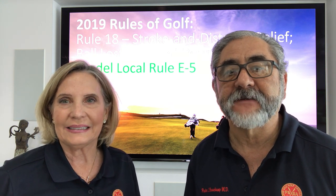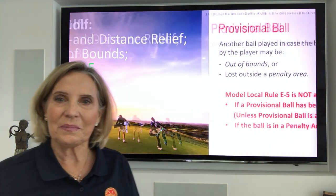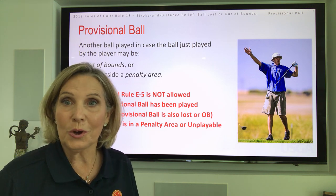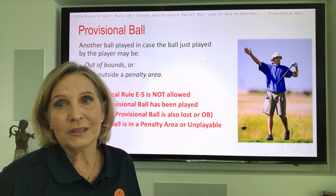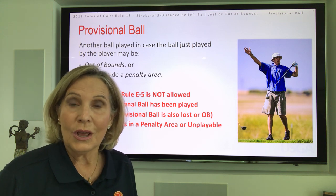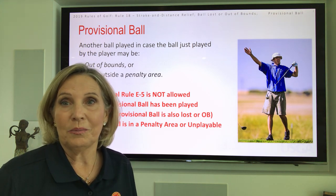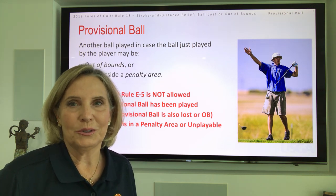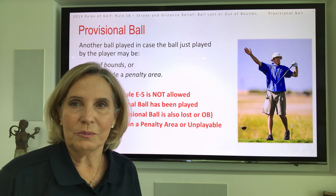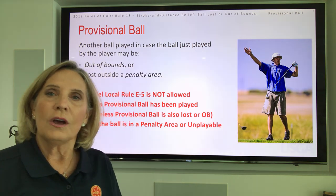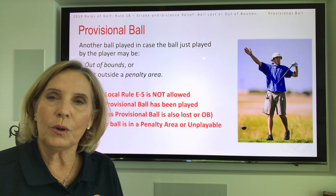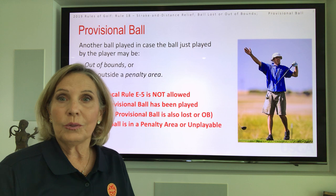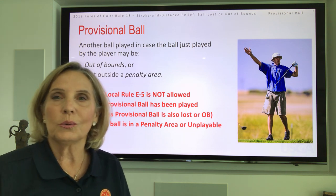Before 2019, when there was a chance our ball was lost outside a penalty area or out of bounds, we used to be advised to play a provisional ball in order to save time before going out to search. That was our only option for relief — stroke and distance. Now there is a new local rule called Model Local Rule E5.